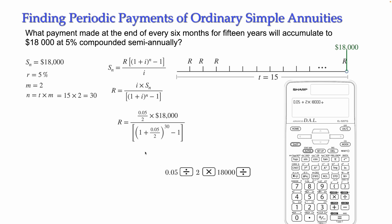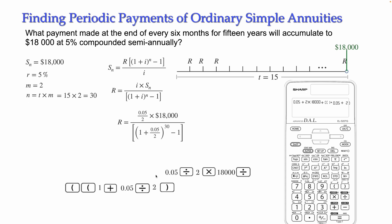...divided by — this is the division line. Open bracket, then open another bracket — two consecutive brackets. Then enter 1 plus 0.05 divided by 2, close the inner bracket, and raise it to the power of 30 using the exponent key. Then minus 1, close the outer bracket, and press equal. In the calculator there is only one type of bracket for all bracket types. The calculator gives the answer: 409.997533.